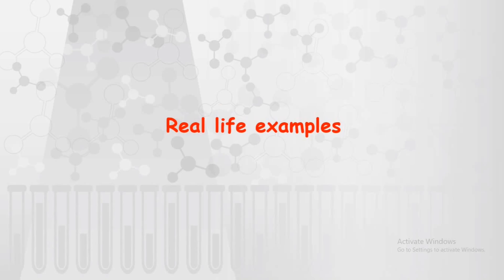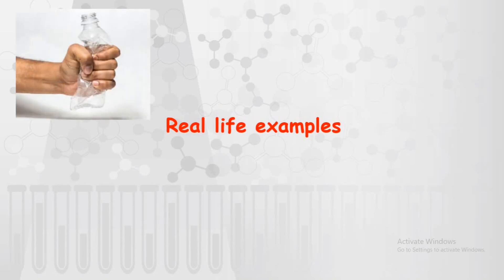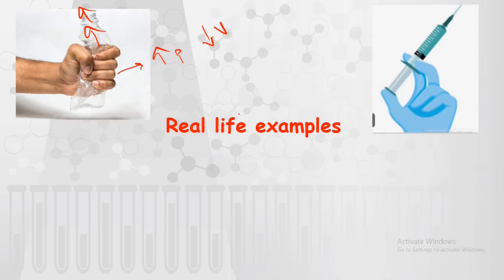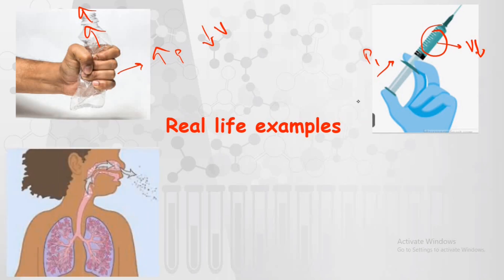Real-life examples of Boyle's Law include: first, a squeeze bottle — when you apply pressure on it, the air inside is released, meaning increased pressure decreases volume. Second, a syringe — pressing the syringe increases pressure and decreases the volume of gas inside. Third, breathing — when you inhale oxygen and exhale carbon dioxide, the diaphragm contracts and expands, demonstrating Boyle's Law in action.